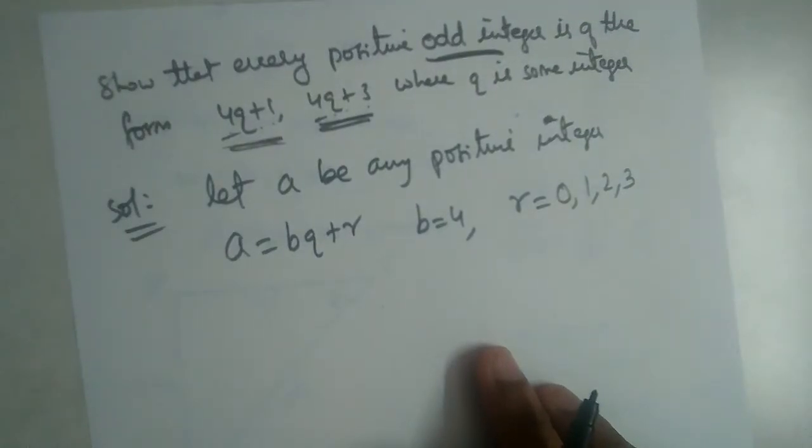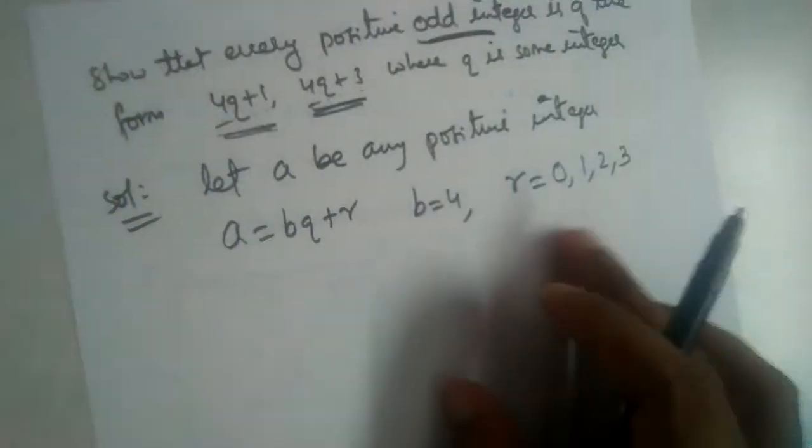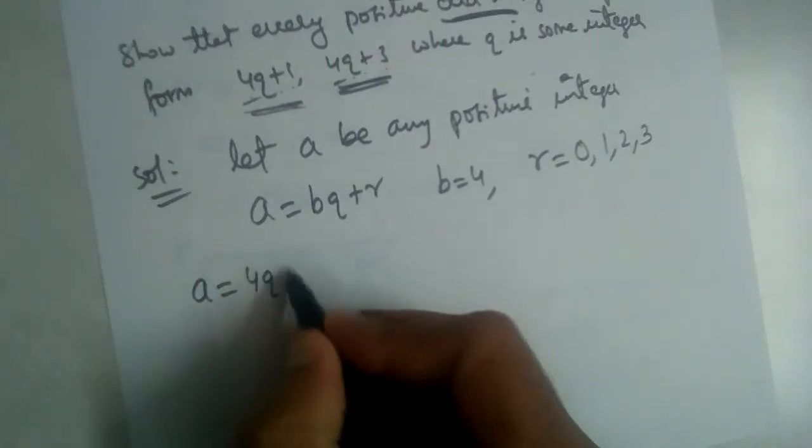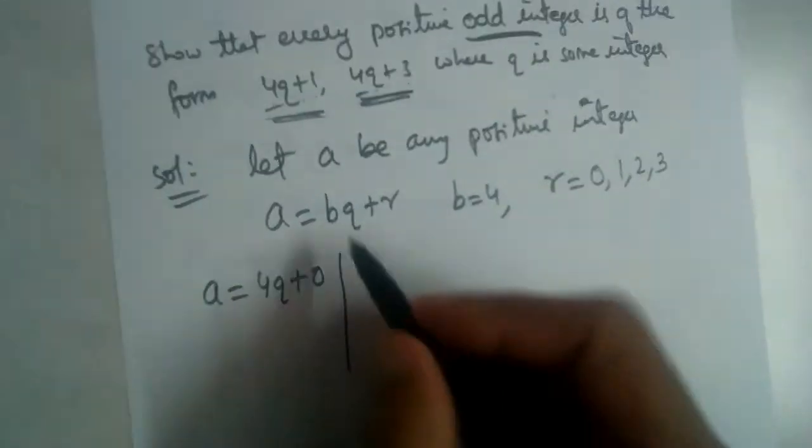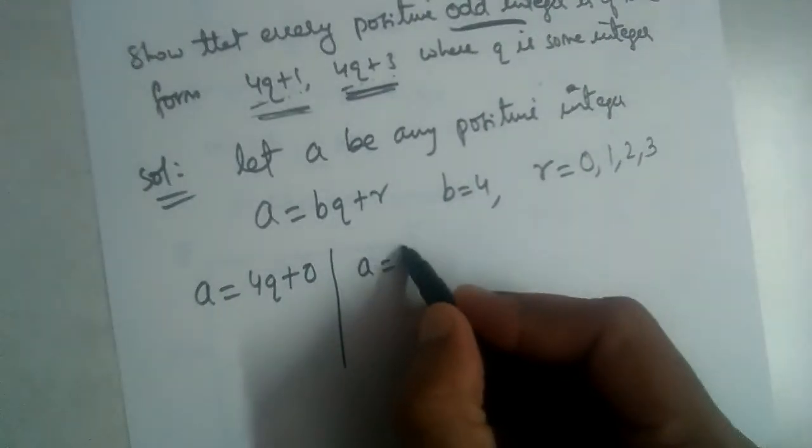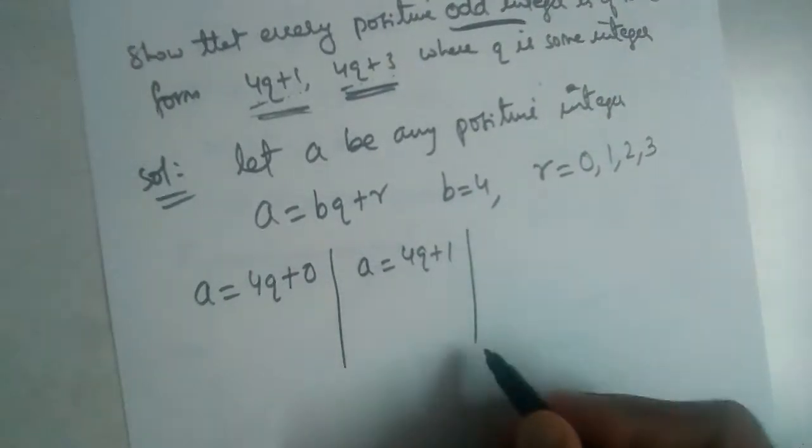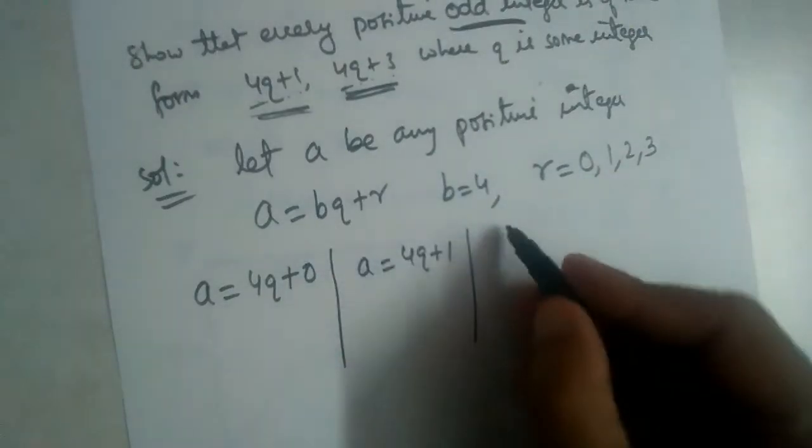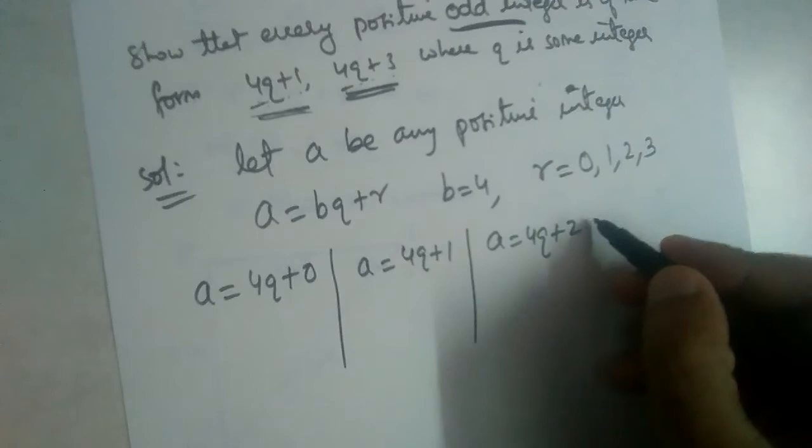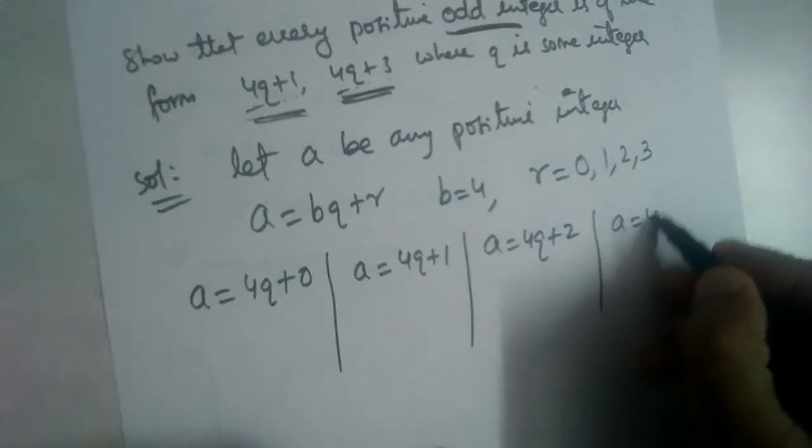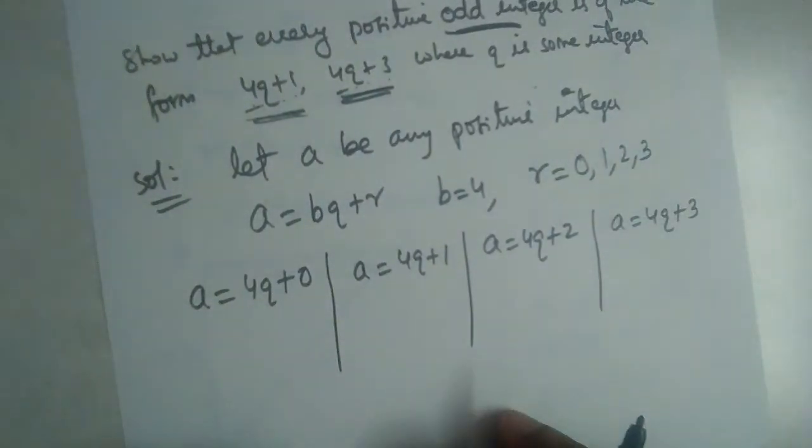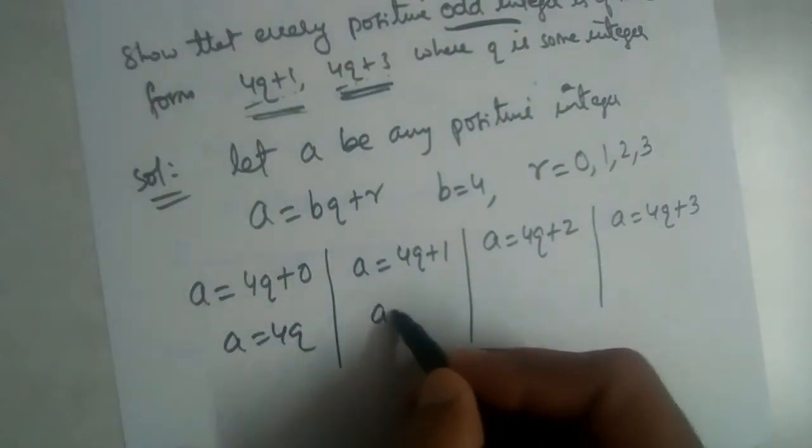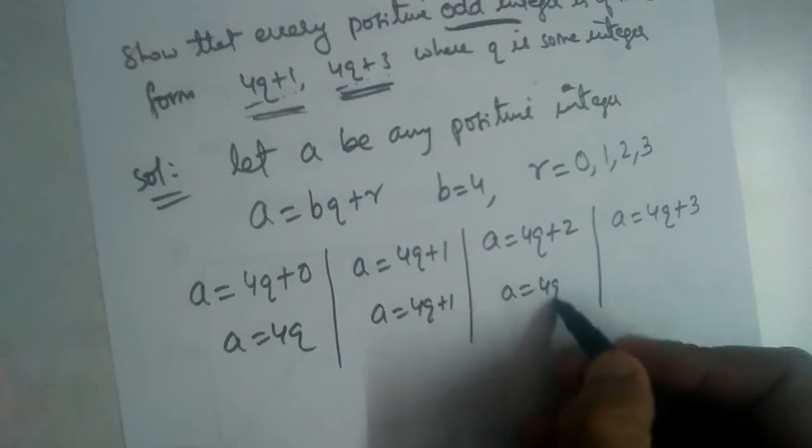We should write all the possible values of a. So a is 4q plus 0, because b is 4. a is 4q plus 1, substituting r values where r is 0, r is 1. Now a is equal to 4q plus 2, and a is equal to 4q plus 3.